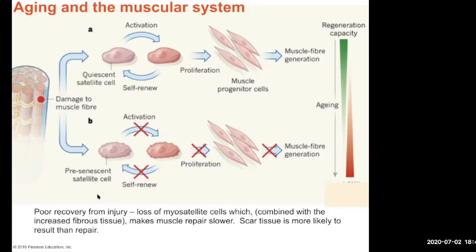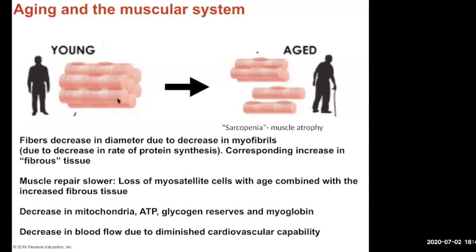Poor recovery from injury — when you hurt something, it takes a lot longer to heal. As you get older, all the nuclei activity starts to slow down. Decreased rate of protein synthesis leads to fewer sarcomeres, which makes your muscles a little atrophied — that's what sarcopenia is: muscle atrophy. Muscle repair is slower because of the loss and slower activity of myosatellite cells. In general, your vascularity is decreasing, along with decreasing mitochondria, ATP, glycogen reserves, and myoglobin — all that starts to slow down, all of which is crucial for growth and healthy muscles.